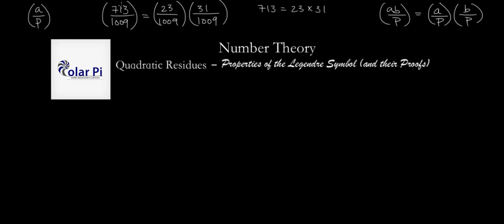which by the way helps us figure out whether or not 713 is a quadratic residue mod 1009, what we can do is enlist the help of this property right here and first factor 713 as 23 times 31, but then we'll be able to write that this here is the same as this by using this property.